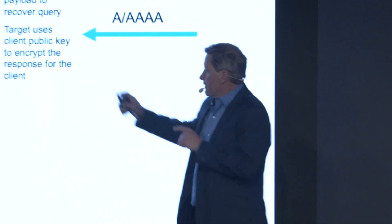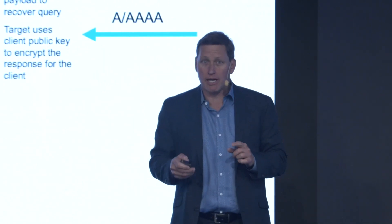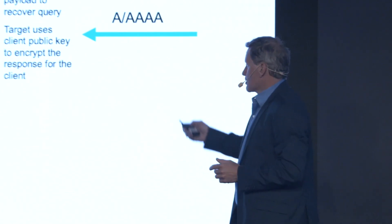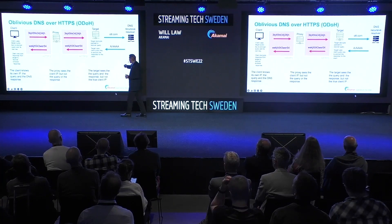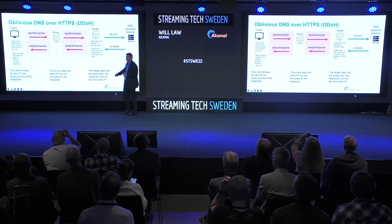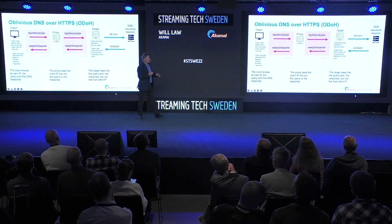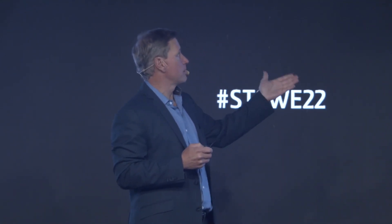What's interesting about this is that the client knows its own IP address. The proxy knows the IP address of the client, but that proxy doesn't know what website it was going to. Conversely, the proxy sees the client IP, but not the query and not the response. The target, which is over here, sees the query and the response, but it doesn't see the client IP. So we've separated the two. And this is true as long as the proxy and the target are not colluding with each other, which they're not, for implementations of Oblivious DNS over HTTPS.